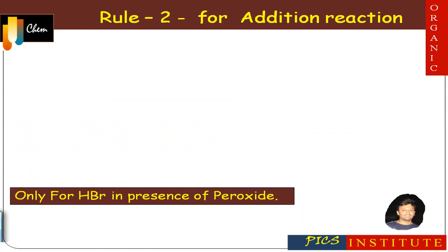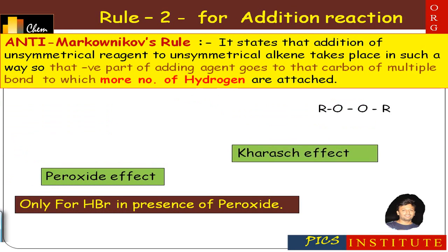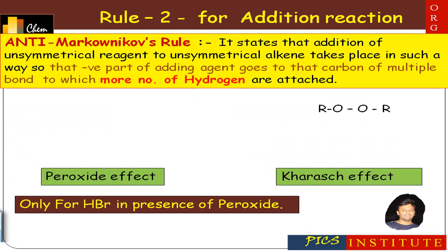The second rule for addition reactions is anti-Markovnikov's rule. It states that addition of an unsymmetrical reagent to an unsymmetrical alkene takes place in such a way that the negative part of the adding agent goes to that carbon of the multiple bond to which more number of hydrogens are attached — opposite to Markovnikov's rule. Anti-Markovnikov's rule is applicable only in one case: addition of HBr in the presence of peroxide. That is why this effect is also called the peroxide effect or Kharash effect.